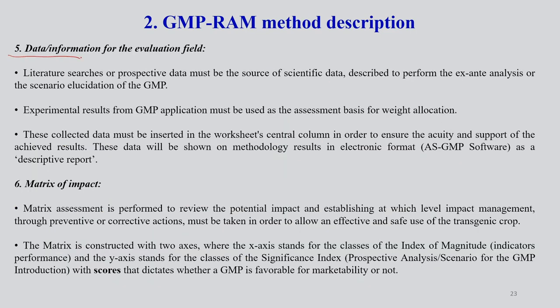Step 5 is data information for the evaluation field. Literature searches or prospective data must be the source of scientific data to perform the X and T analysis or the scenario elucidation of the GMP method. Experiment results from this kind of application must be used as the assessment basis for weight allocation. The collected data must be inserted in the worksheets' central column in order to ensure the accuracy and support of the achieved result. This data will be shown in methodology results in electronic format as a descriptive report.